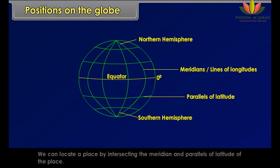We can locate a place by intersecting the meridian and parallels of latitude of the place.